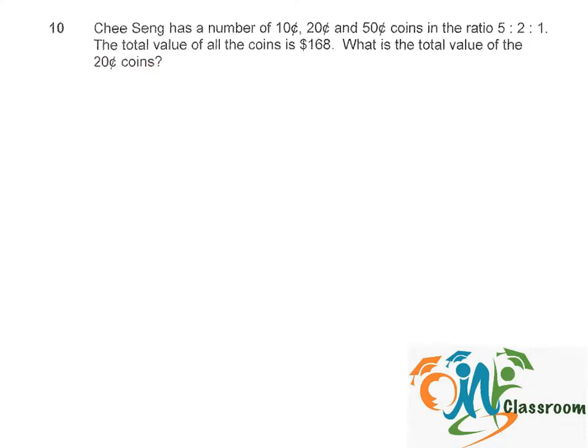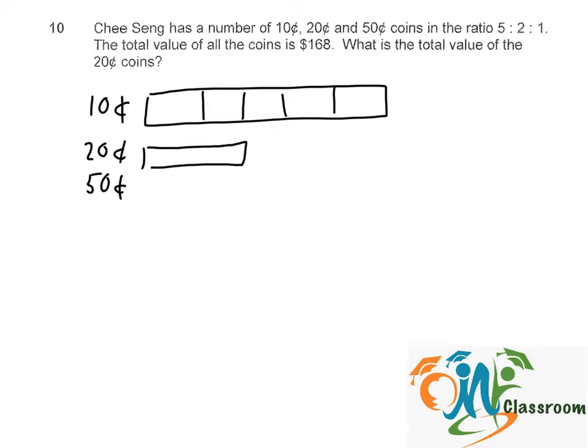Okay, we can draw a model to represent the number of coins. So we have 10 cents, 20 cents, and 50 cents in the ratio of 5 is to 2 is to 1. So if you want to convert this to the value of the coins, we just need to multiply a multiple to the unit.